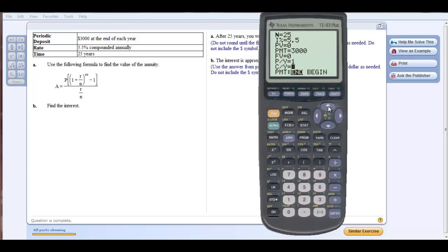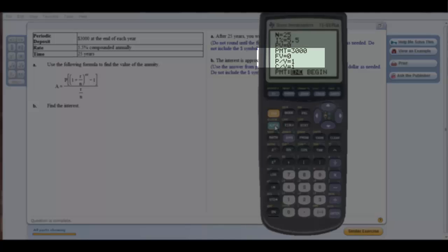So I'm going to go back up to future value, that's what I want the calculator to find. So I'm going to click on alpha, and then over the enter button is the word solve, that will solve the problem for us.